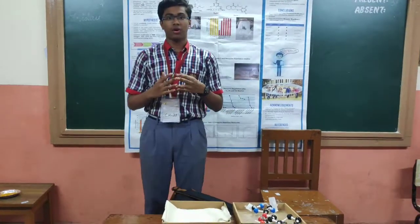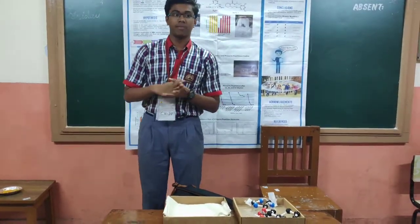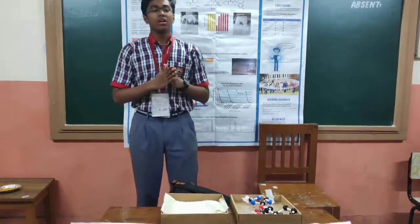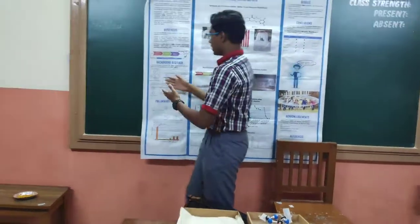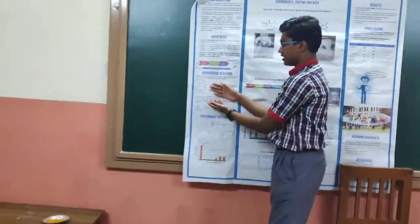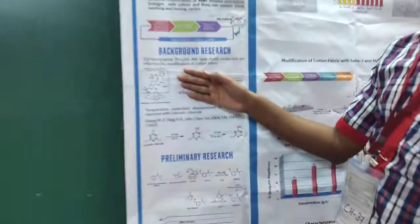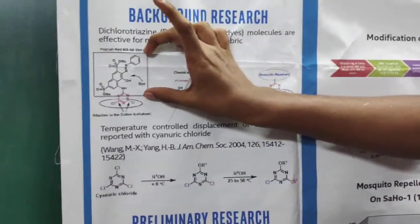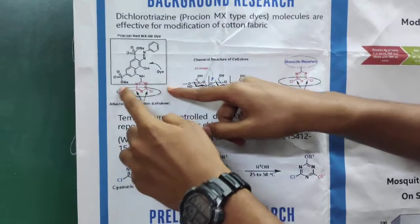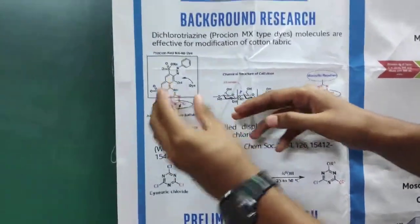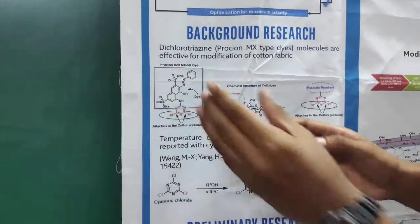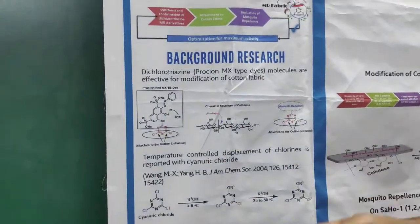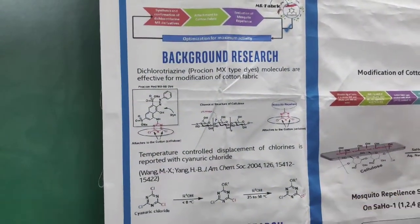I tried to identify the mechanism of dyes through many scientific papers. A typical dye works in this way: this part of the dye gives the color, and the red colored moiety or part of the dye doesn't give the color but gives it the property to attach to cotton cloths.